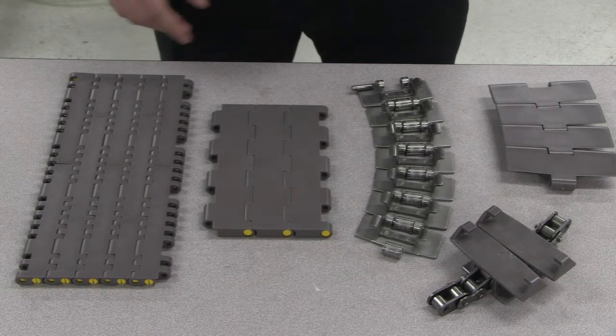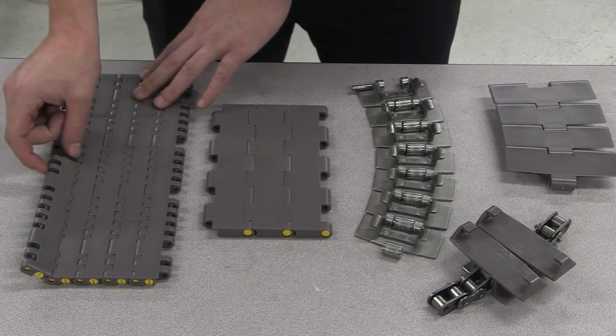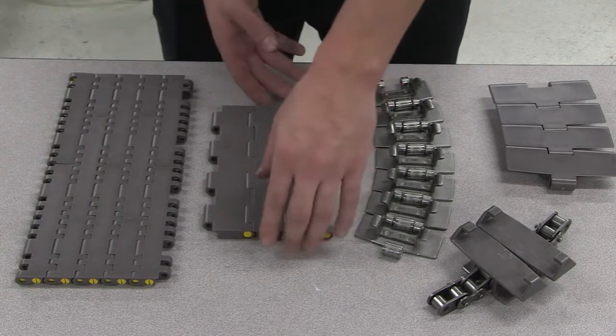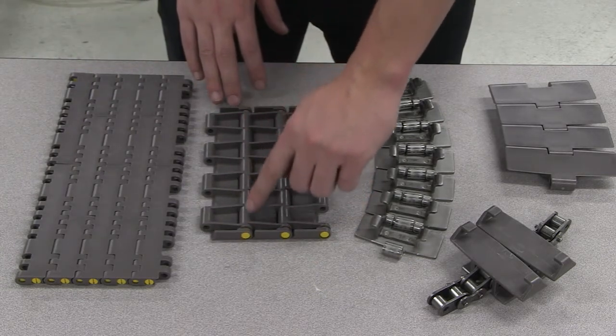MatTOP chains have a modular design in which individual links are bricked together to provide a continuous surface. They also include a pin that extends the full width of the chain.